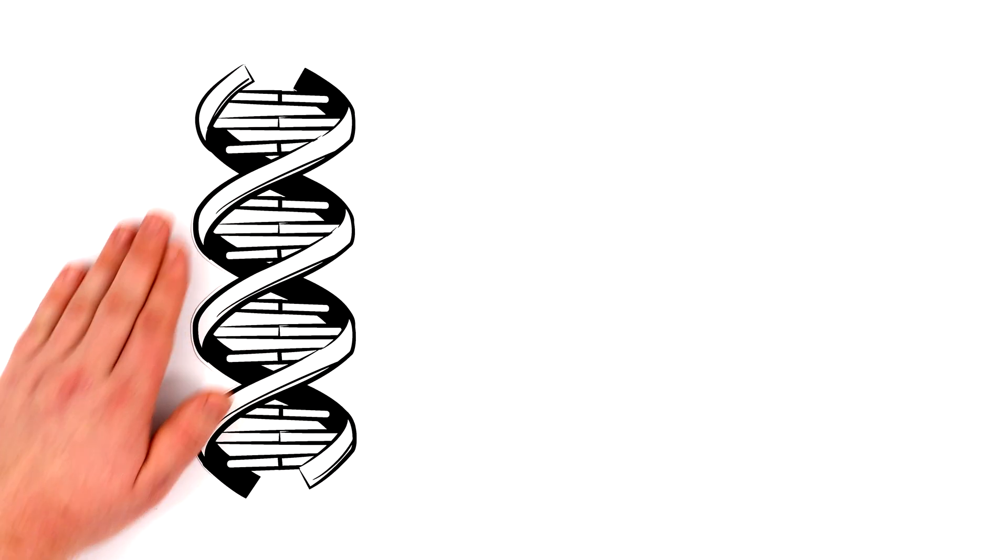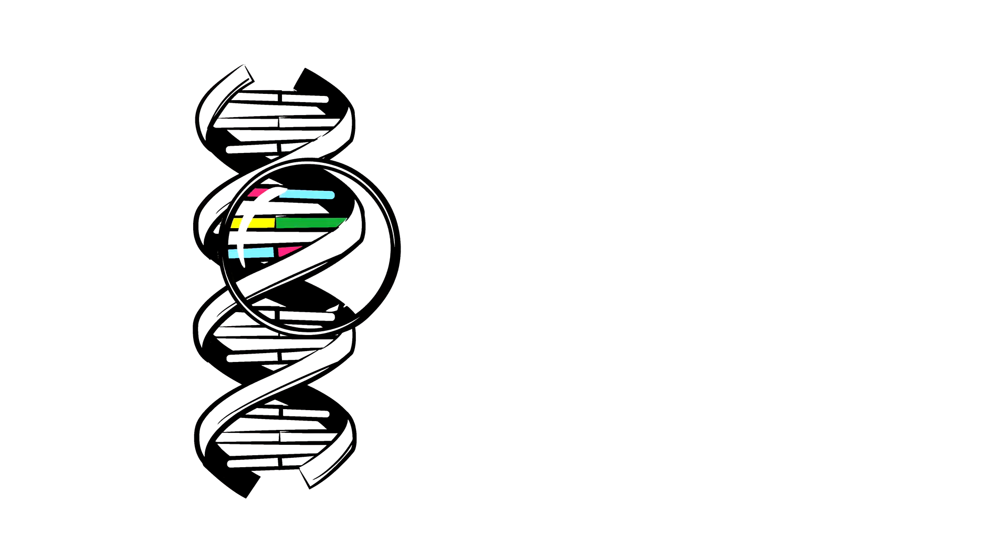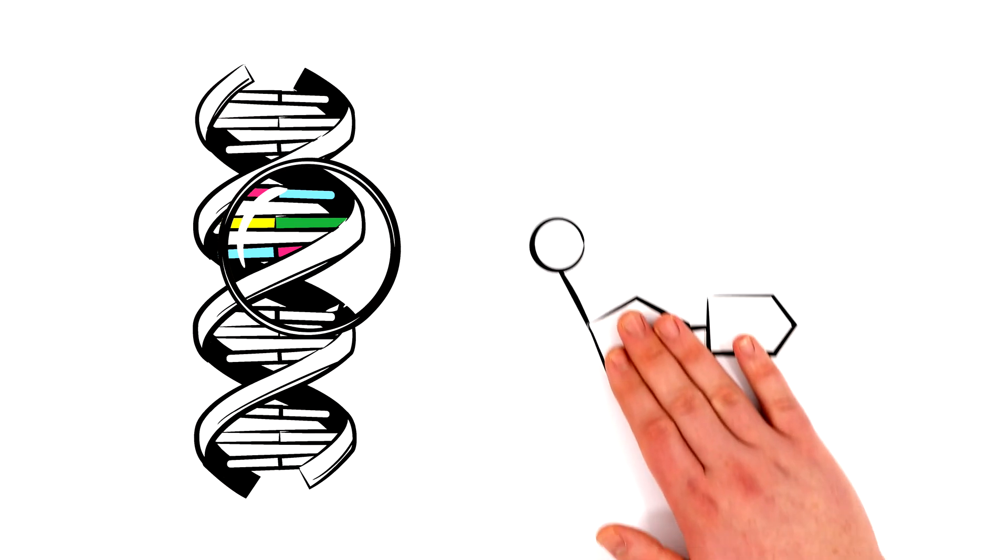DNA looks a bit like a twisted rope ladder. It consists of many molecules that are strung together. These are the nucleotides.